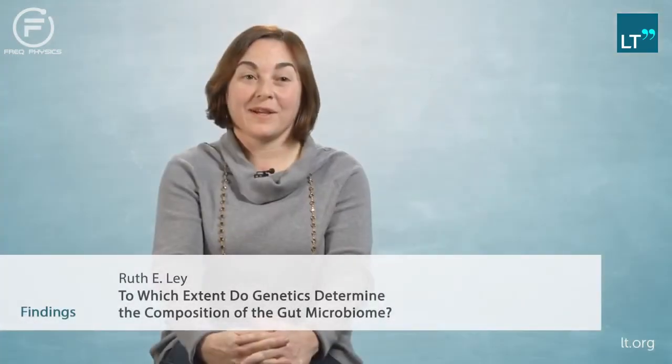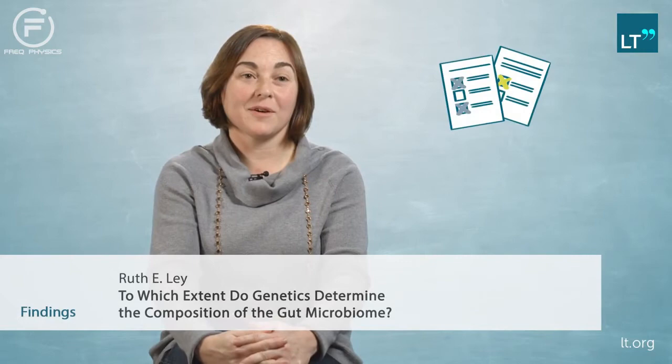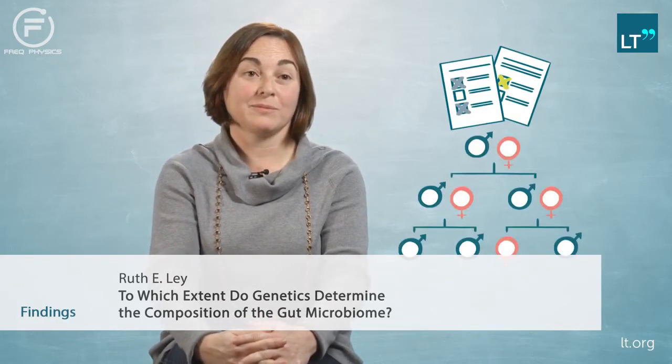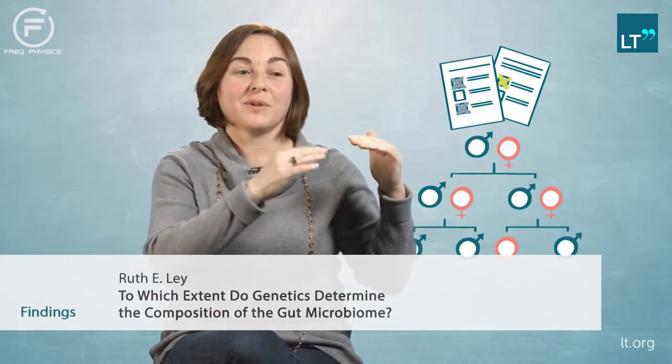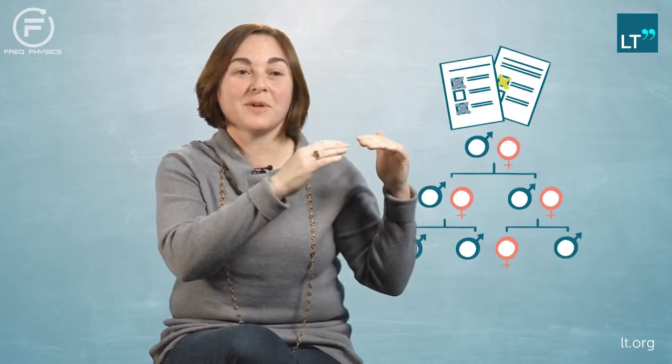So the first finding was a list of the microbes in the gut that are heritable. Meaning, when you look in the identical twins, you get more similar levels than when you look in the fraternal twins. That means there's a genetic component to their abundances.